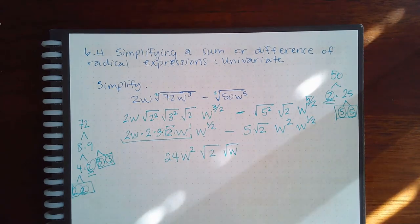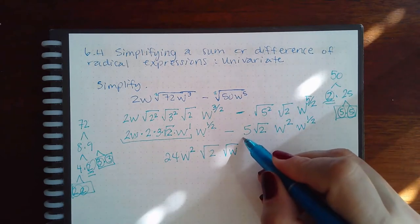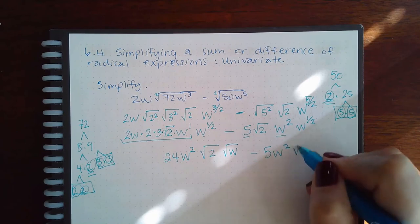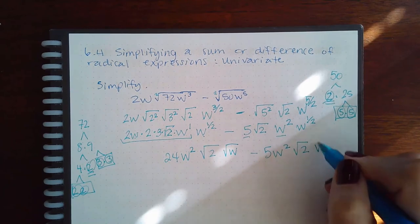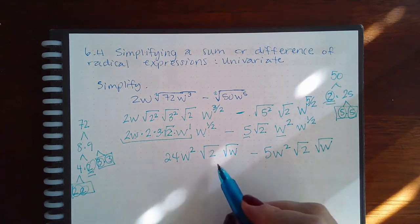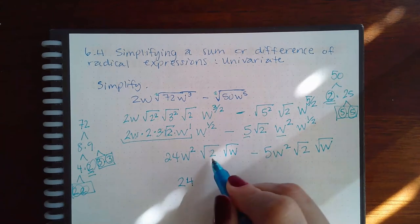And this guy written in its radical form would be square root of w. Now we've got that term correct. Here I have these two guys are on the outside, so 5w squared, and then square root of 2, and this guy in its radical form, which is the square root of w.